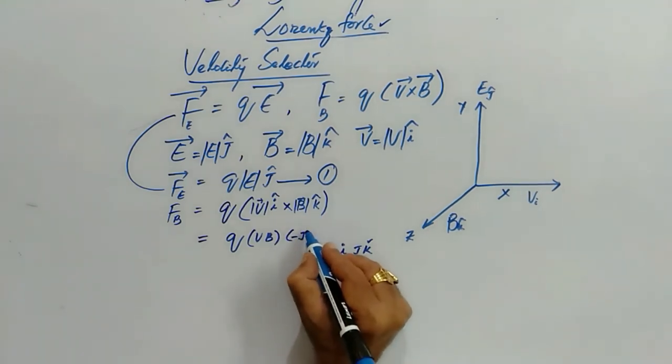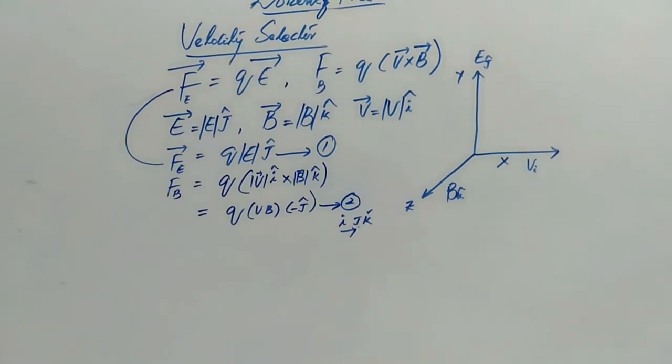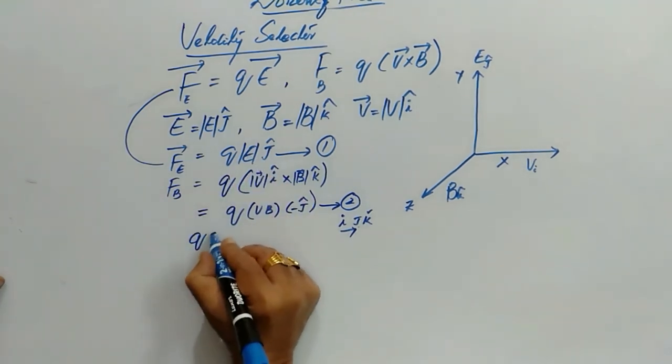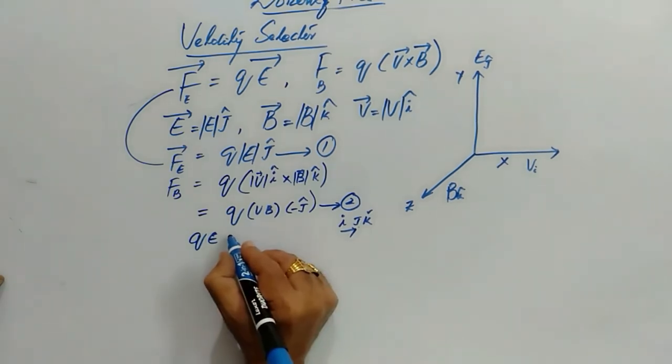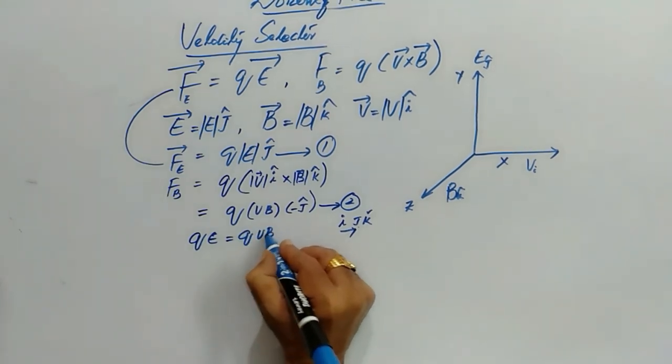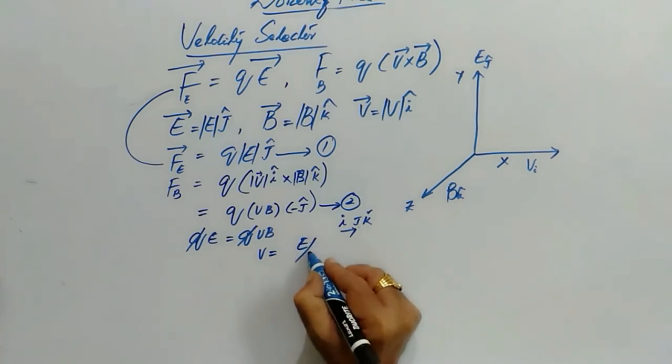Therefore it should be minus j. From the first and second equations we can say that these two forces are acting one along j positive j, the other along negative j. If we select in such a way the two fields that the force experienced by the charged particle in magnitude is same then we can write QE must be equal to QVB. Therefore V is equal to E by B.